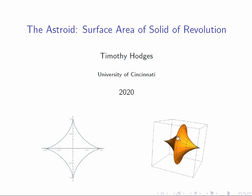This is Tim Hodges with a quick video about how to calculate the surface area of a solid of revolution in parametric coordinates. And we're going to do it for the asteroid.